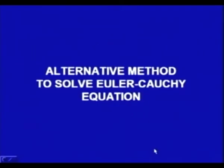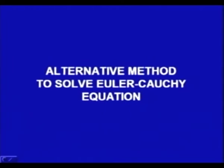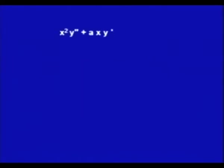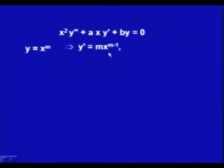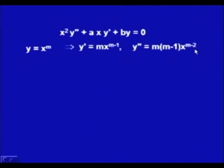There is an alternative method to solve the Euler-Cauchy equation. In the equation x² y'' + ax y' + by = 0, the coefficient of y' is x and of y'' is x². So if we put y = x^m, we think it could satisfy this equation. Indeed, y' = m x^{m−1} and y'' = m(m−1) x^{m−2}, and these must satisfy the equation.